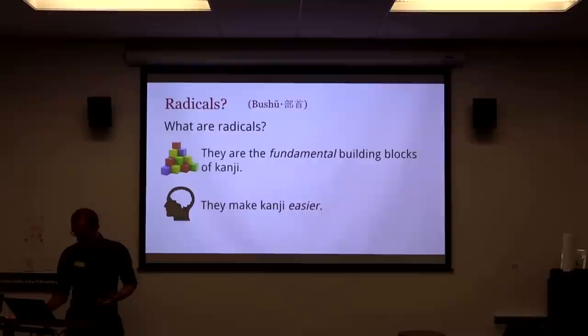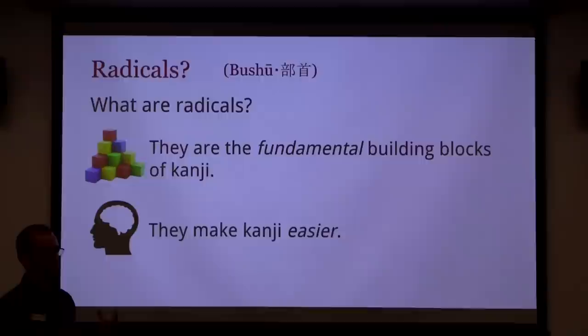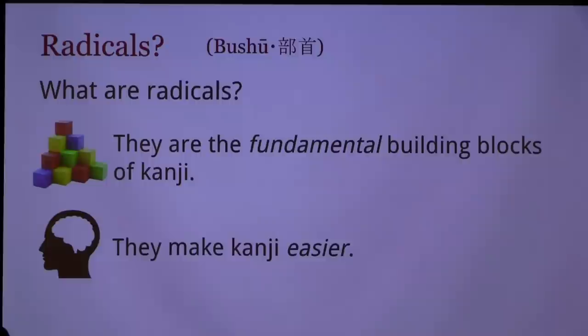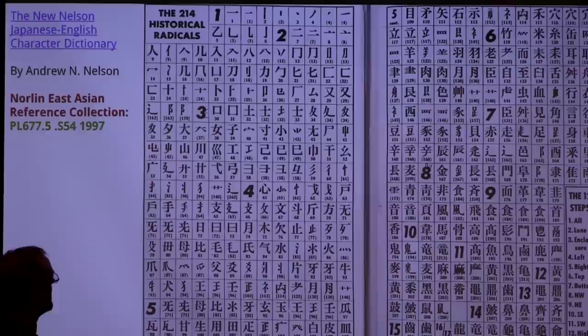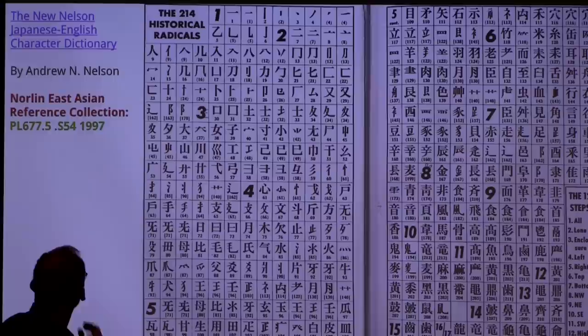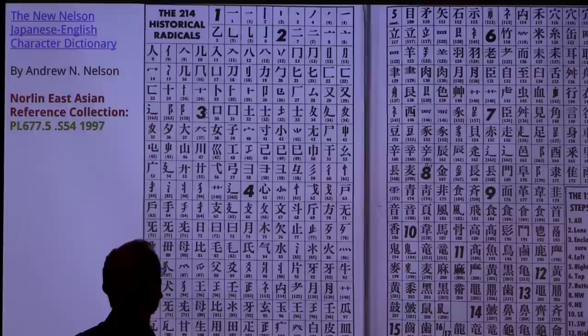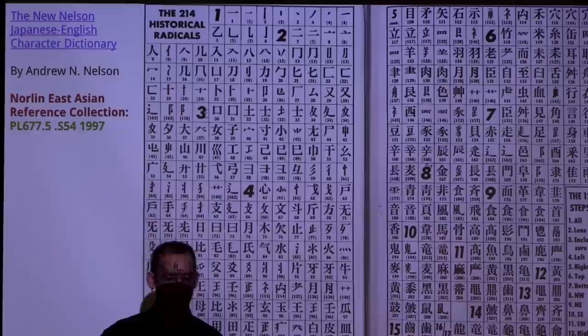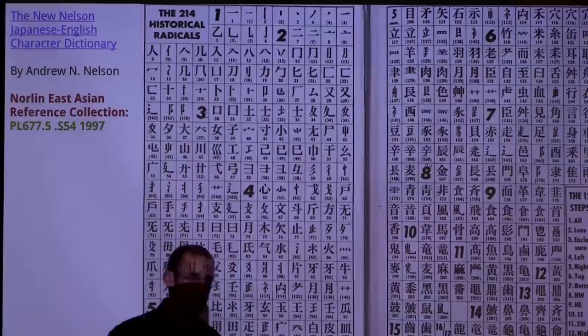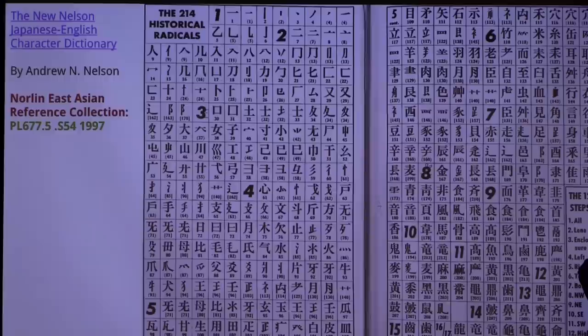Radicals are the fundamental building blocks of kanji. If you know them, they make kanji a lot easier to work with. This chart here — from the New Nelson Japanese-English Character Dictionary — looks a little overwhelming at first, but we're going to get into why it looks the way it does. One thing I want to make really clear about how all of this works is that when you look at how characters are put together, it's not dissimilar from how English spelling works.